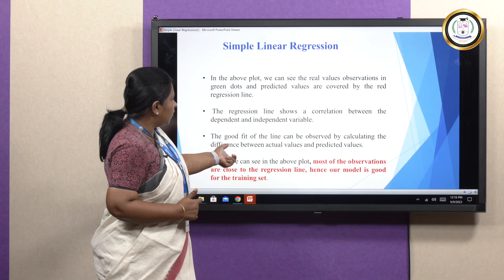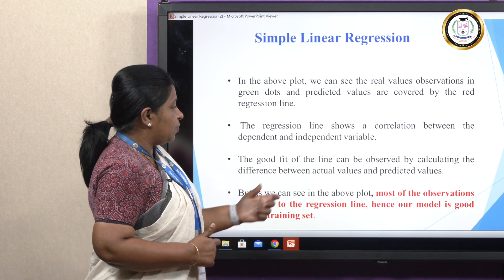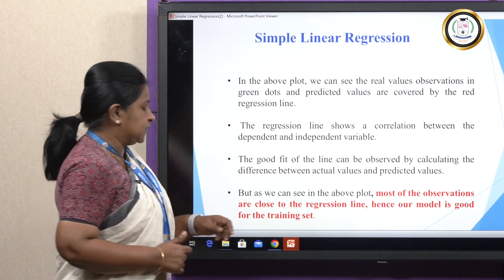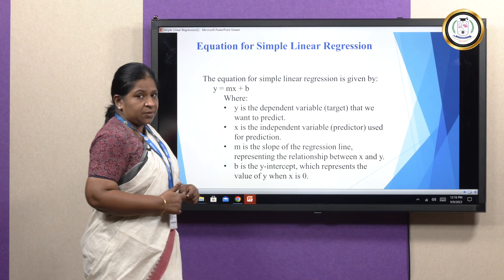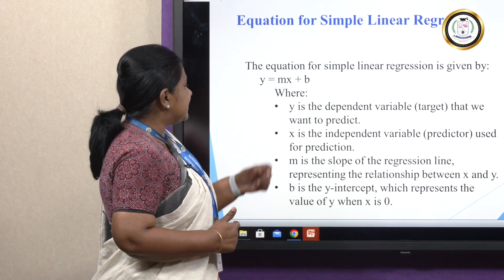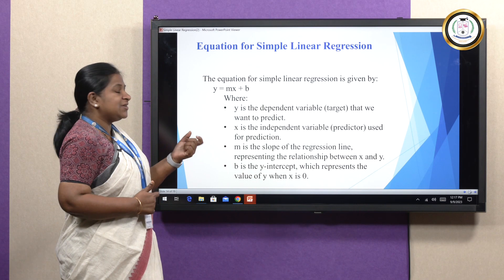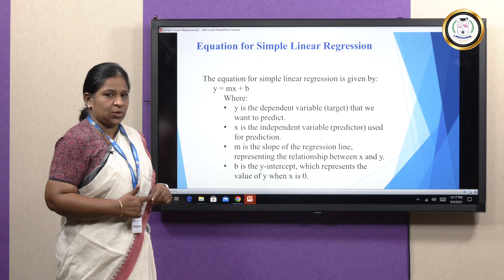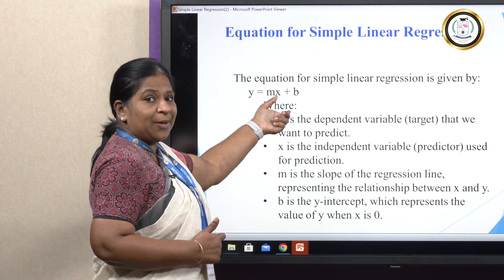The regression line shows a correlation between the dependent and the independent variable. The goodness of fit can be observed by calculating the difference between actual values and predicted values. As we can see, most observations are close to the regression line, so we can say the model is good for the training set. The equation used in simple linear regression is y = mx + b, where y is the dependent variable, x is the independent variable, m is the slope of the regression line showing the relationship between x and y, and b is the y-intercept representing the value of y when x equals 0.